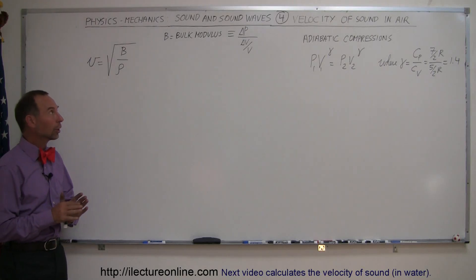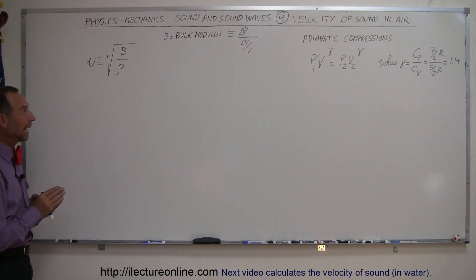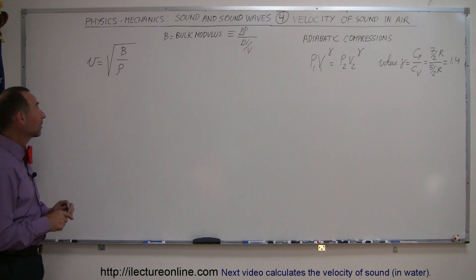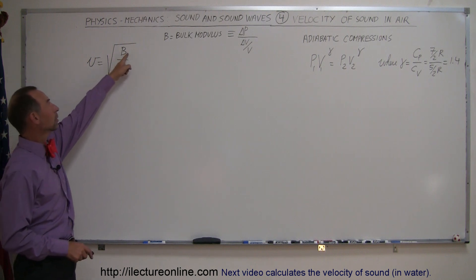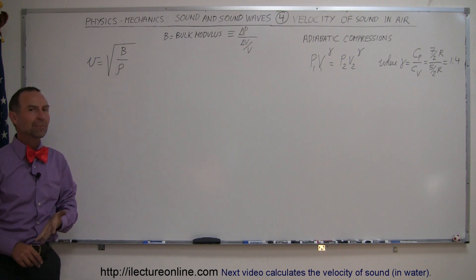Here we're going to take a closer look at the speed of sound in air. The speed of sound in any medium is equal to the square root of the bulk modulus divided by the density of that medium.